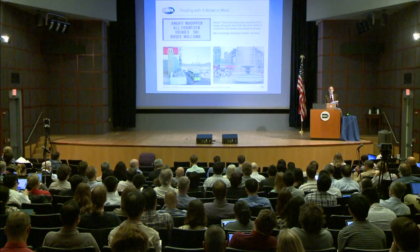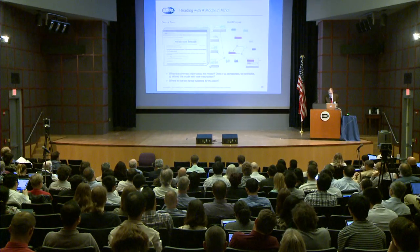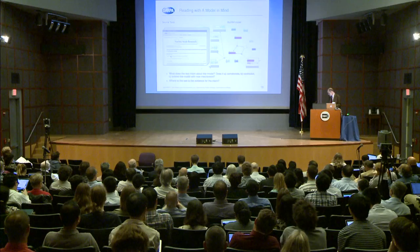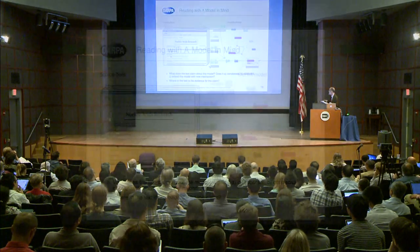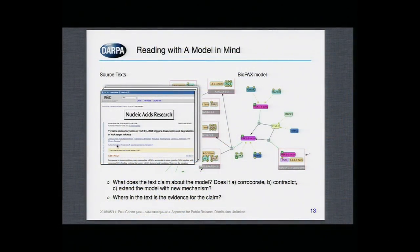That's the kind of reading we want in the Big Mechanism program. We're providing the readers with a huge model in the BioPAX representation language and a stack of texts. They're going to read the texts and answer just two questions: What does the text claim about the prior model — does it corroborate, contradict, or extend it? And where in the text is the evidence for that claim?